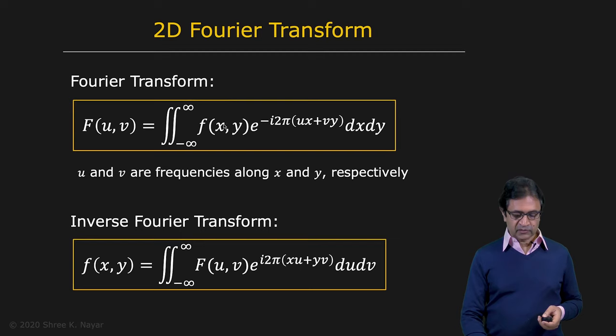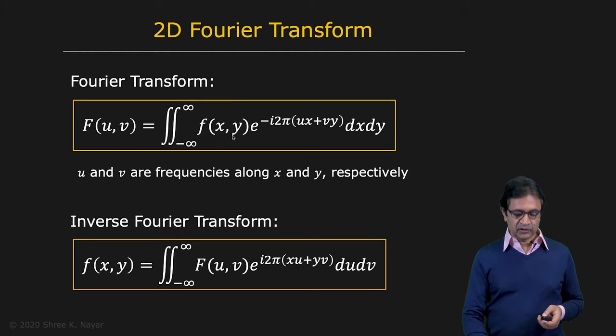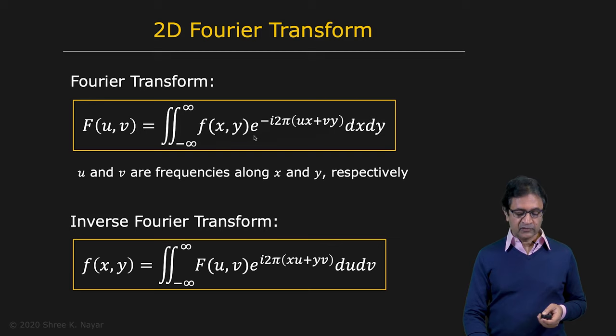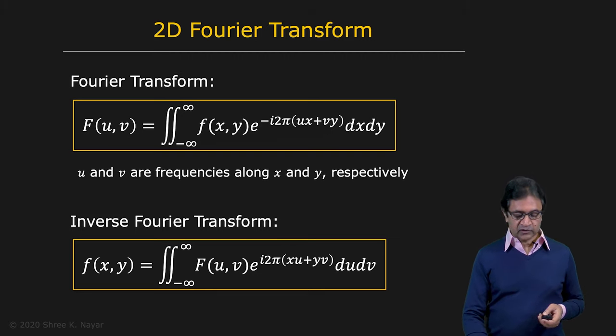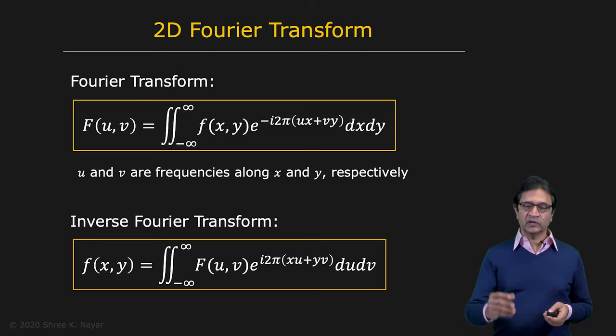Let's take a look at how image filtering works in the frequency domain or Fourier domain. First, we need to extend the Fourier transform from 1D to 2D because images are two-dimensional. Here is the expression for the two-dimensional Fourier transform. You have f of xy, which is the image, x and y are the spatial coordinates, and now you have two frequencies: u along x and v along y. So you have f of xy times e to the power of minus i 2 pi (ux plus vy), integrated over the extent of the image, over x and y.